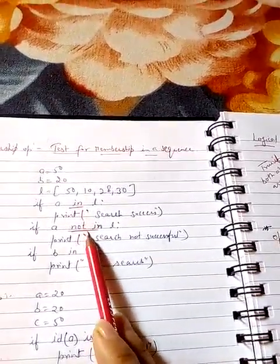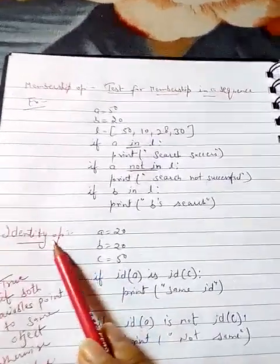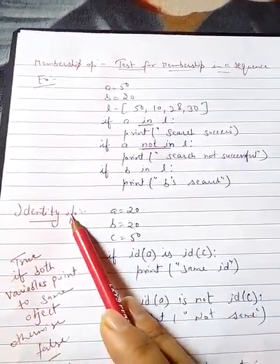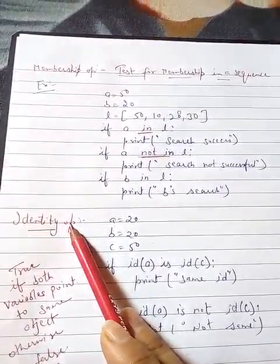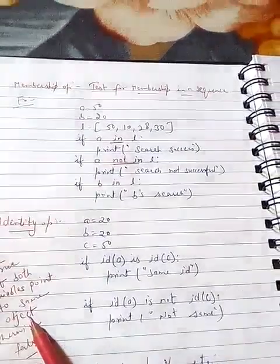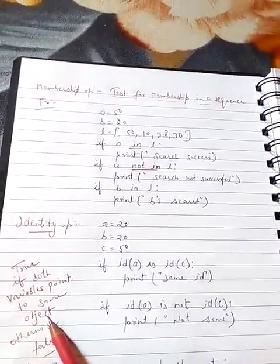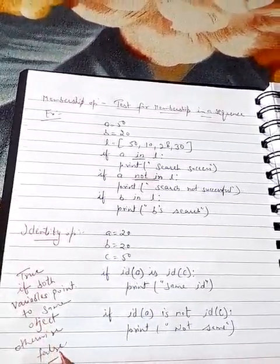It search for existence and it search for not existence. Now the next one is identity operator. Identity operator is used for identification or you can say identity of the object with another object. If the same object refers to the same identity that means value will be true otherwise it will be false.